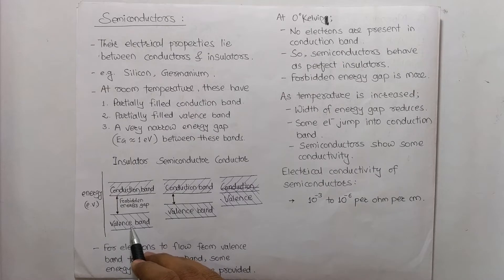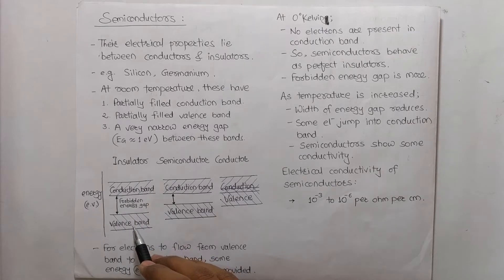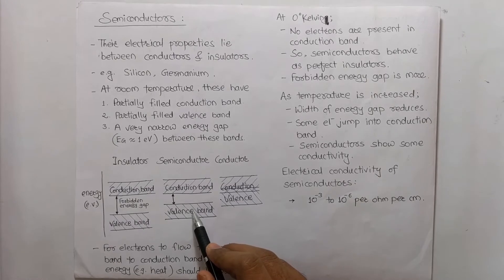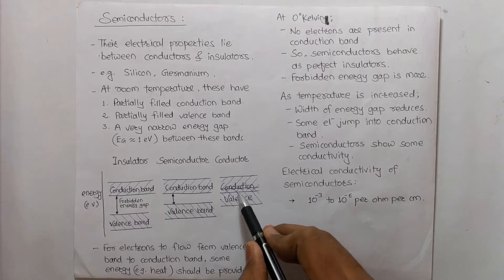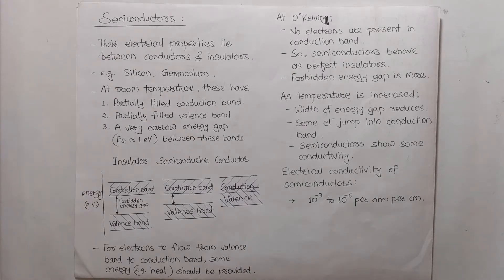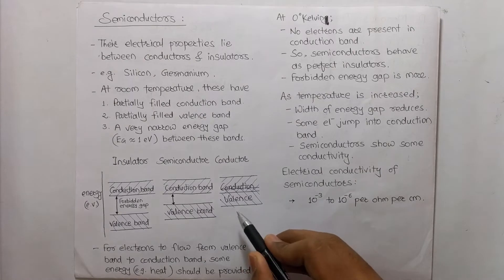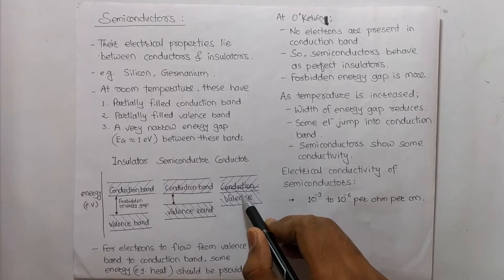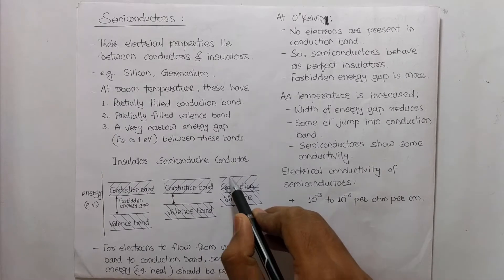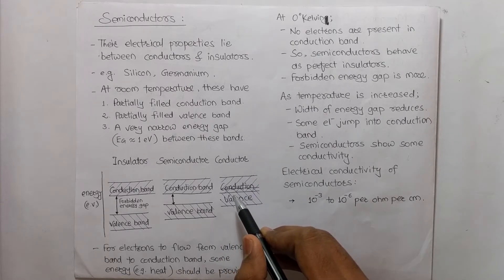For electrons to move from the valence band to the conduction band, they need more energy when the energy gap is larger. When the energy gap is smaller, they need lesser energy. For conductors, the conduction and valence bands overlap, meaning no extra mechanism is needed to make electrons flow — electrons are already present in the conduction band, making it very easy for conductors to conduct electricity or heat energy.